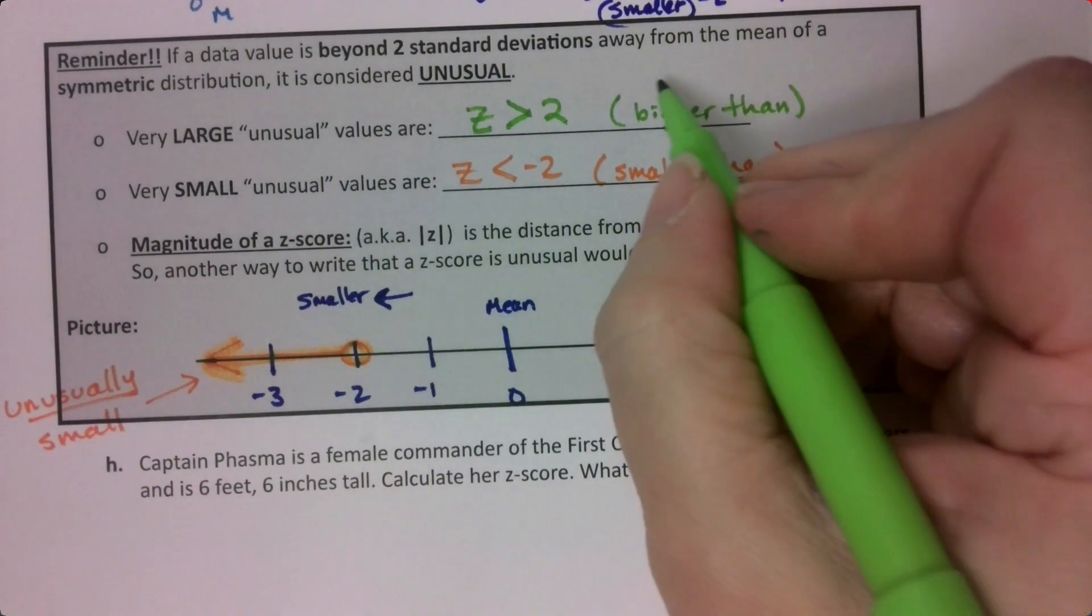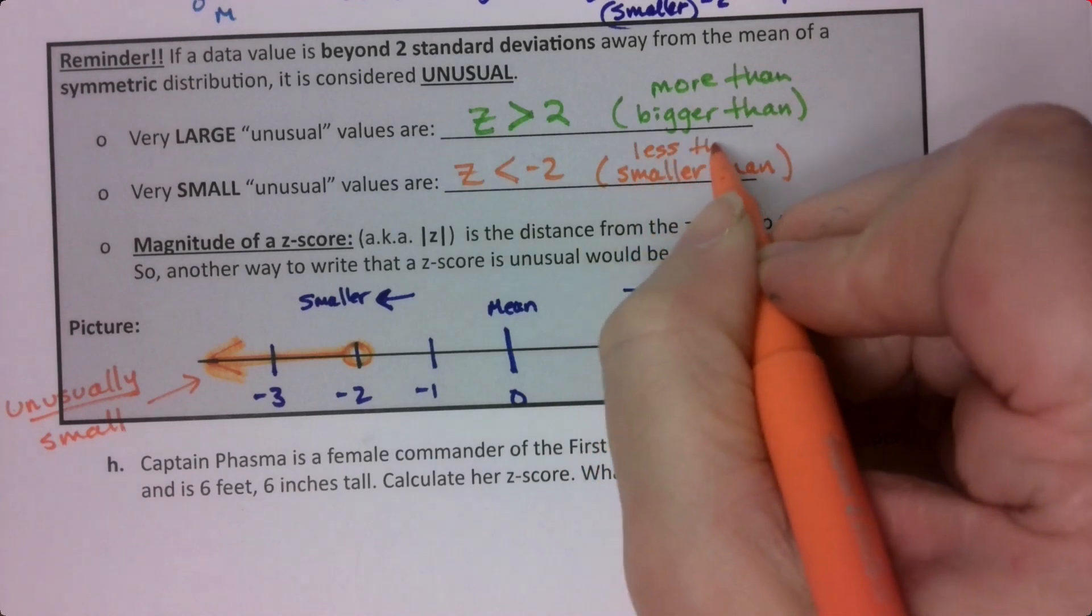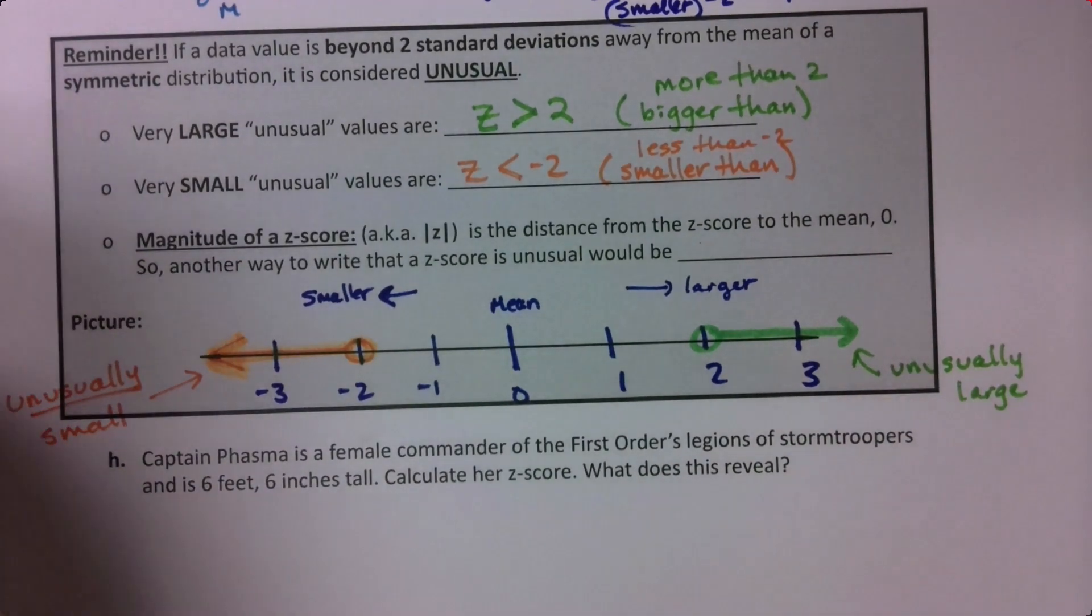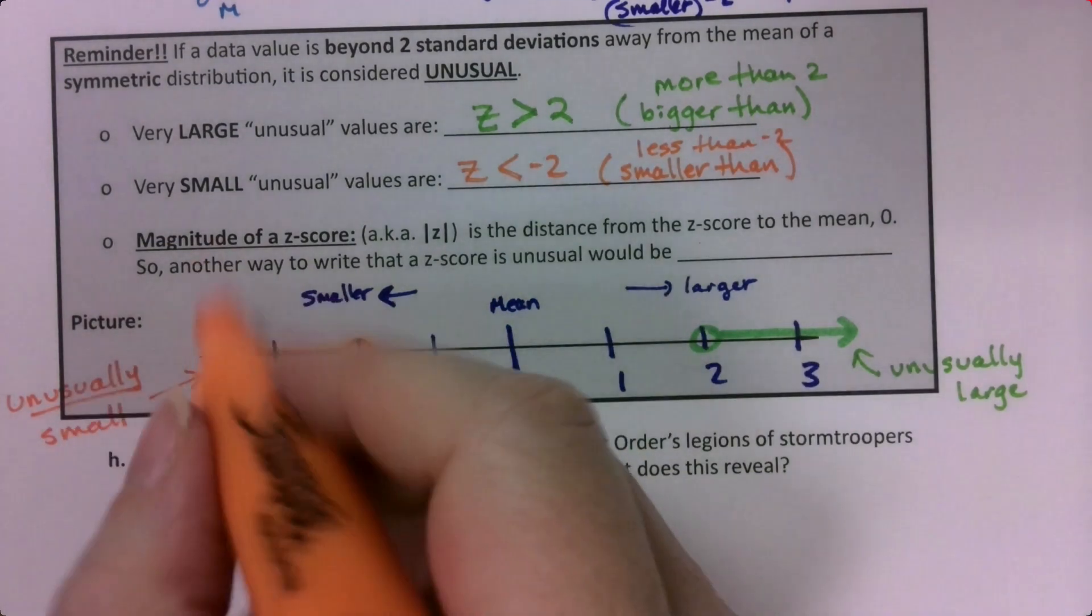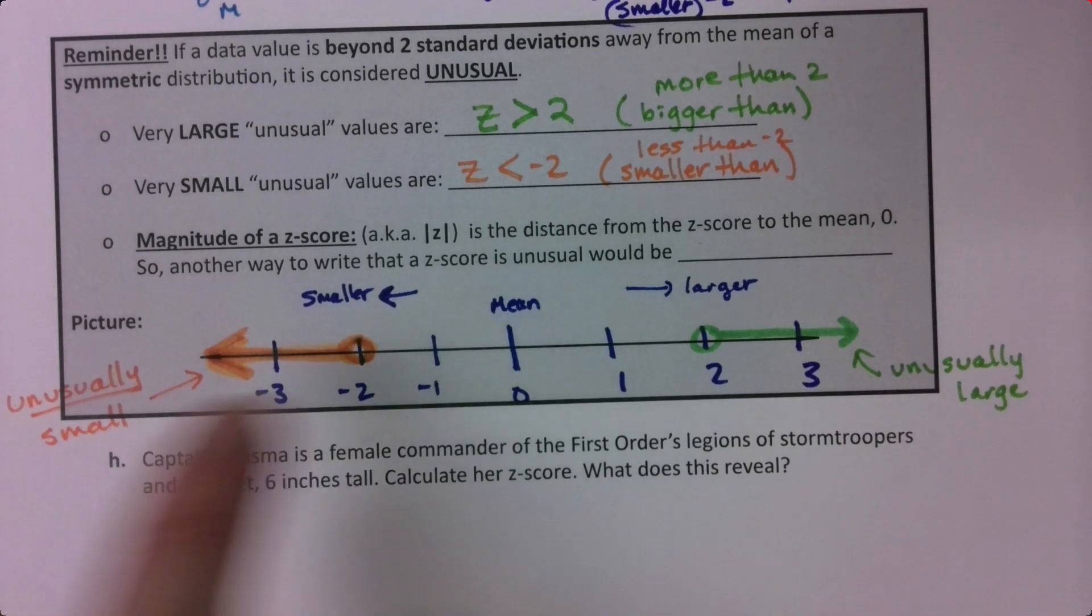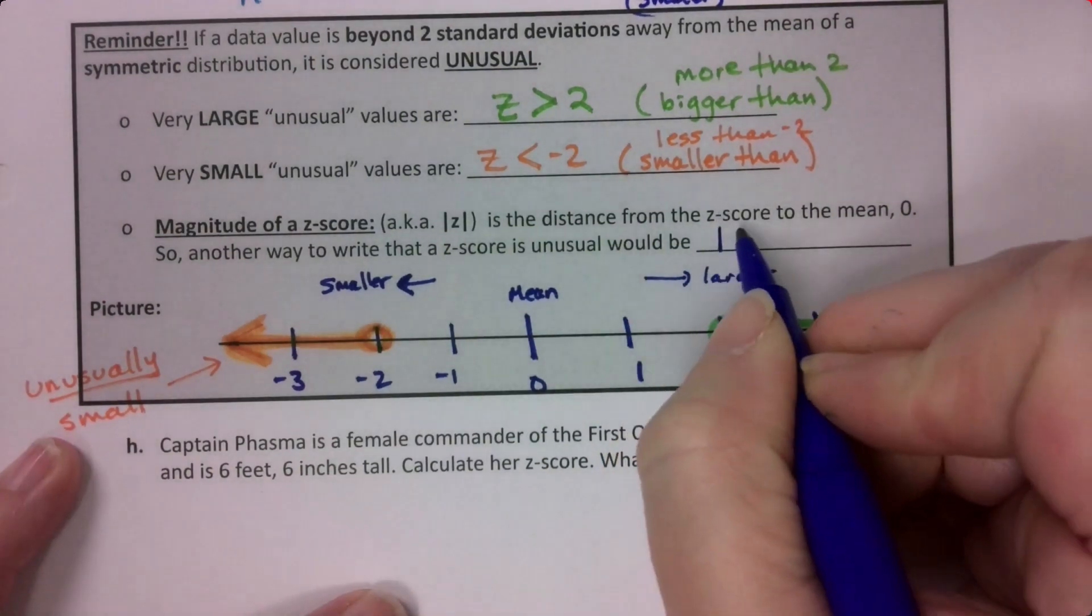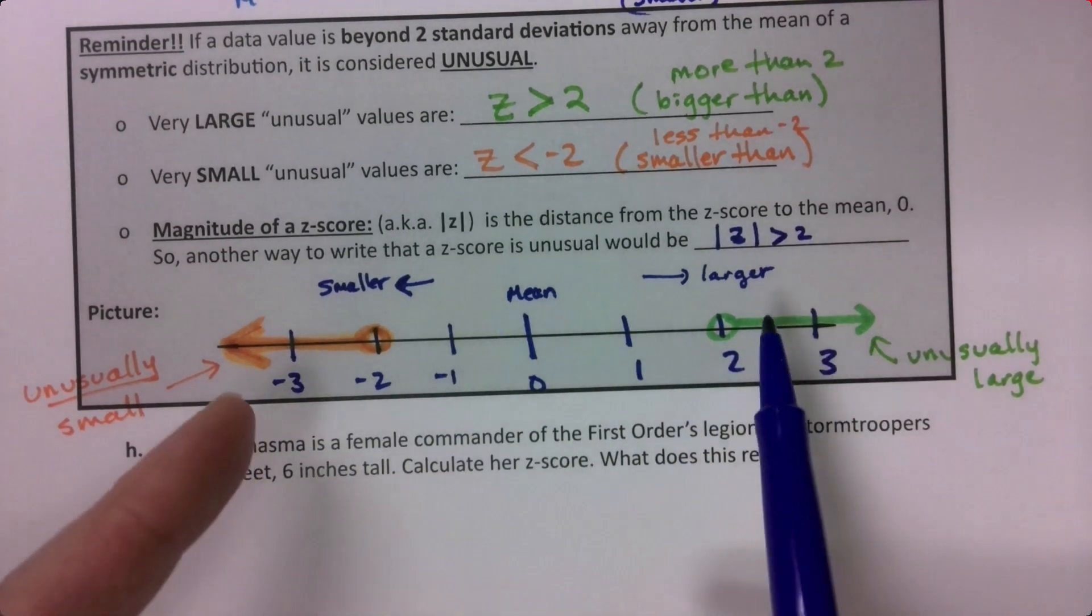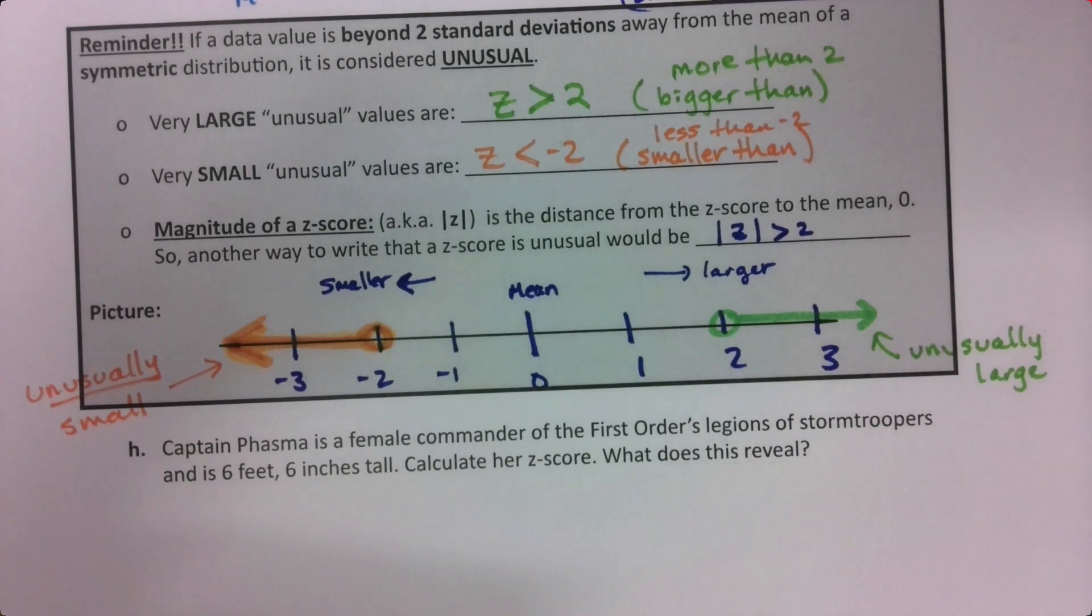Usually people are okay with the positive side and they get confused by the negative side. So just make sure you keep it clear. Anything lower than negative two, like negative 2.2, negative 2.5, negative 3, those would be unusually small values. Another way to say this is that the absolute value of Z is greater than two. If you're more than two away, that's the distance that Z is from the mean, and it's more than two.